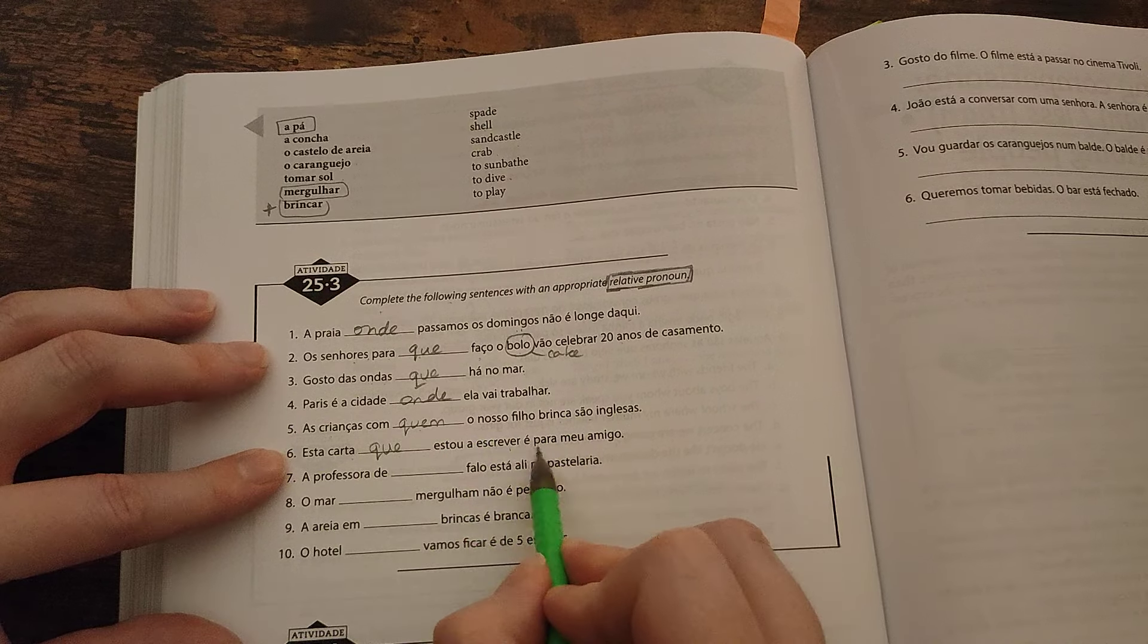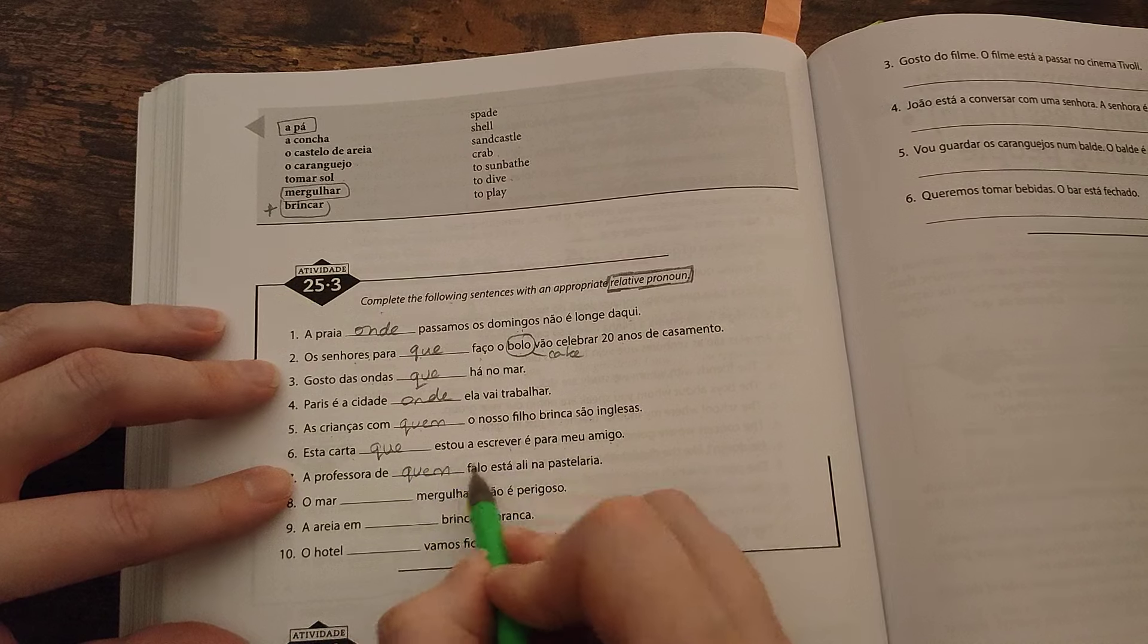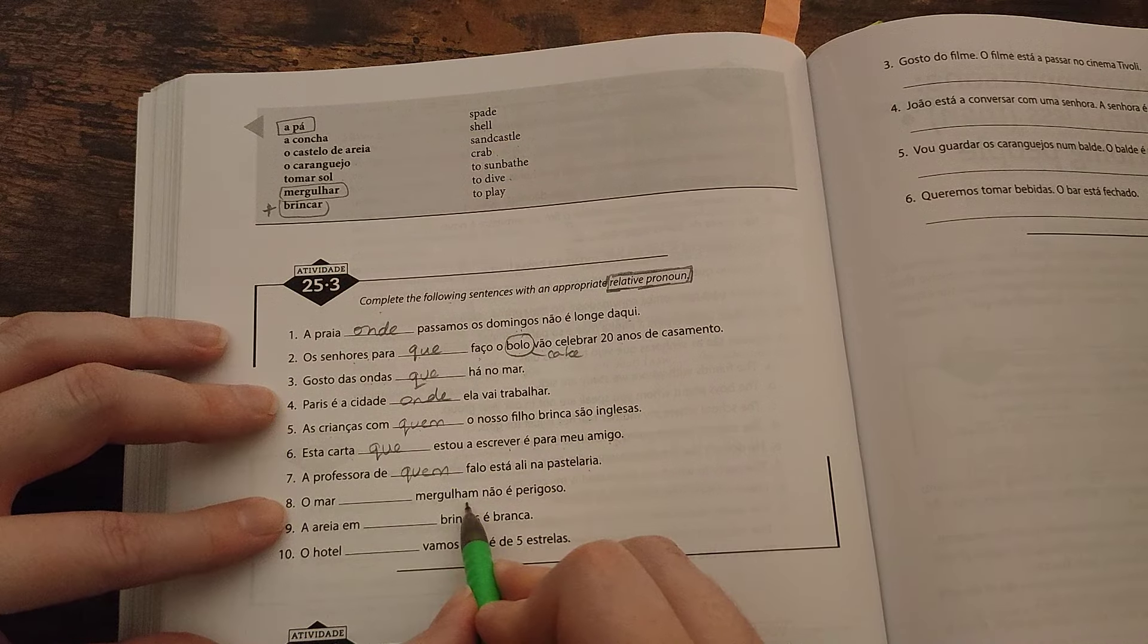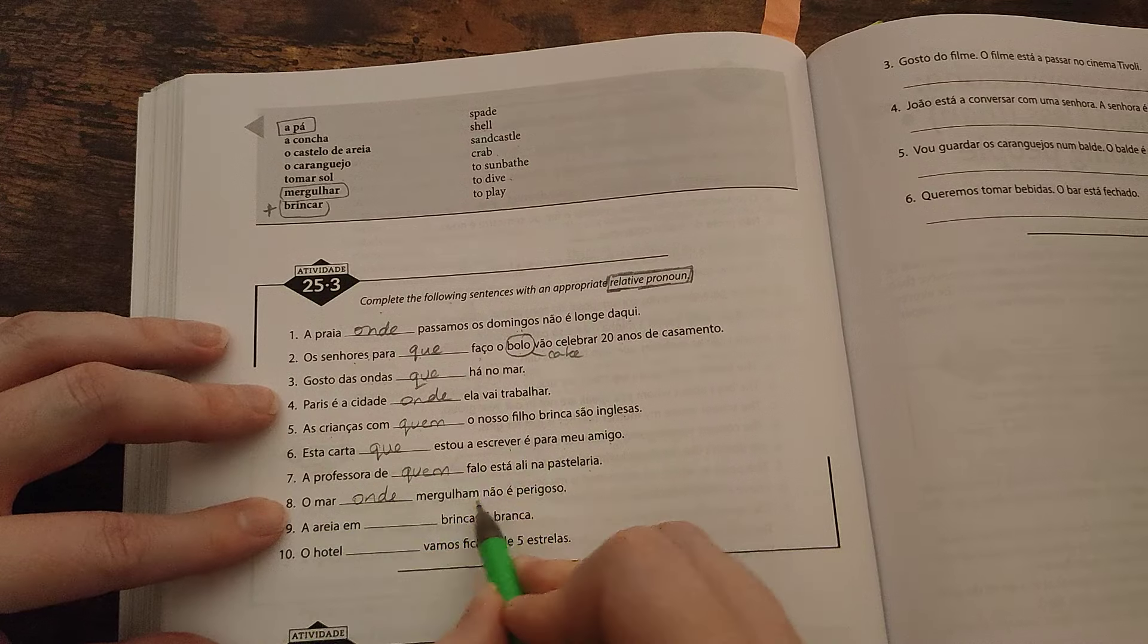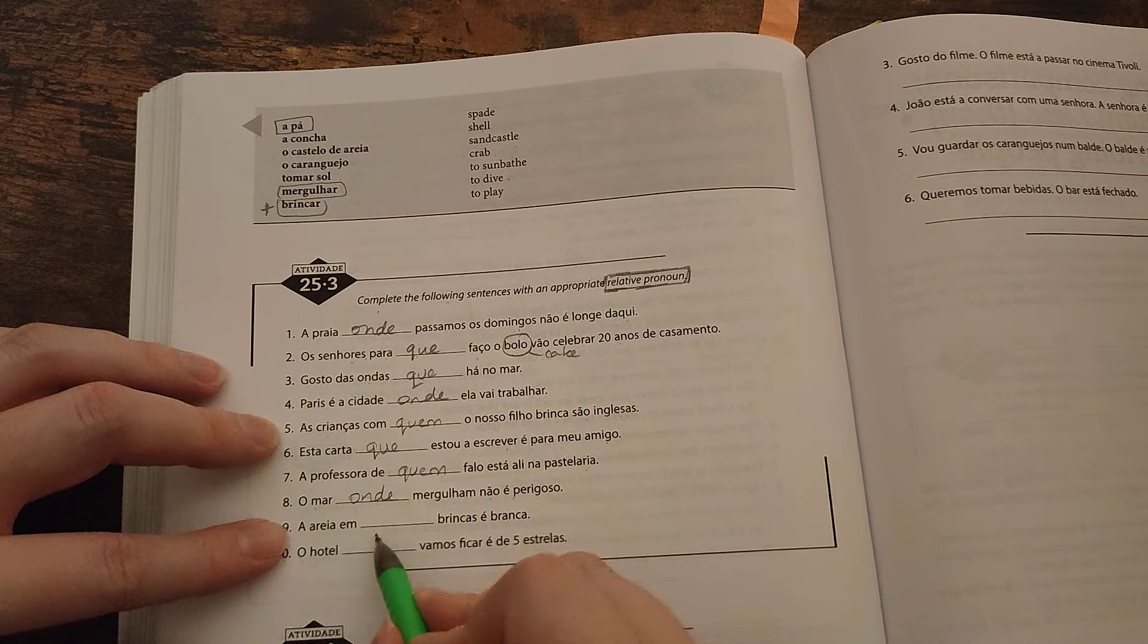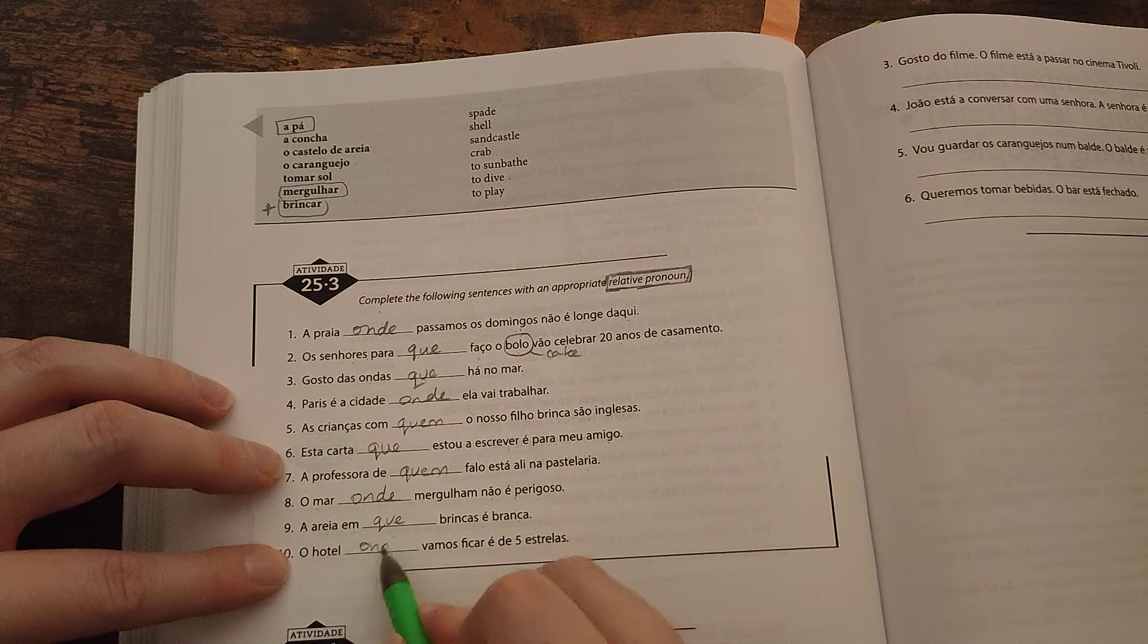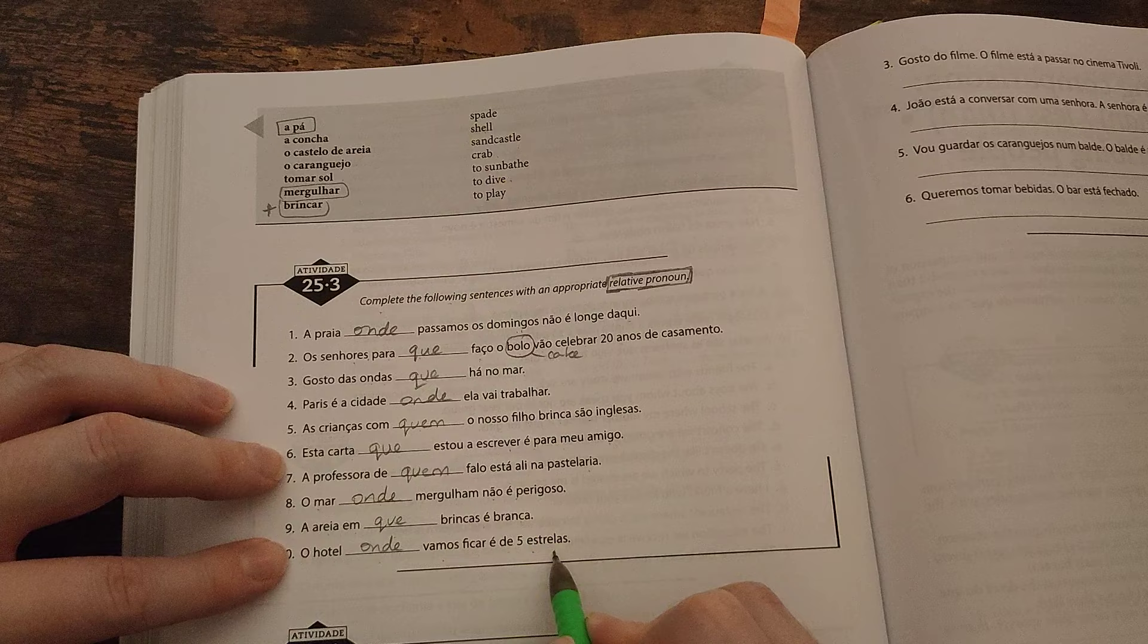This letter which I am writing is for my friend. The teacher about whom I am speaking is there in the cake shop. The sea where they are diving is not dangerous. A areia em que brincas é branca. The sand on which you are playing is white. O hotel onde vamos ficar é de cinco estrelas.